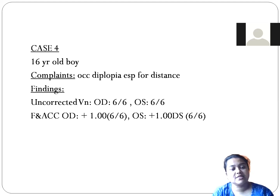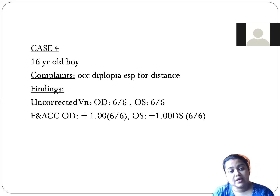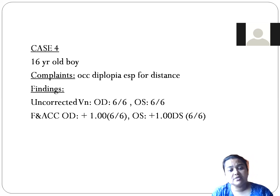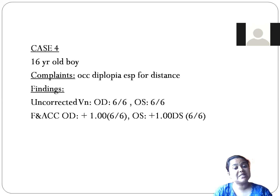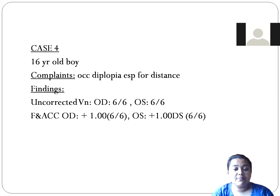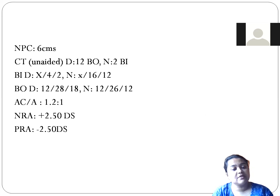Case 4: A 16-year-old boy has come to the clinic with complaints of binocular diplopia, especially for distance. The uncorrected vision is 6/6 for distance in both eyes. Retinoscopy and acceptance show latent hypermetropia of plus one in both eyes. The patient can read 6/6 but complains of diplopia mainly for distance — whenever looking at distance, the patient experiences diplopia.